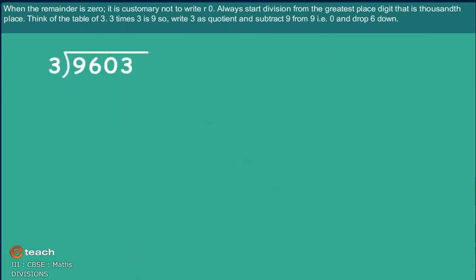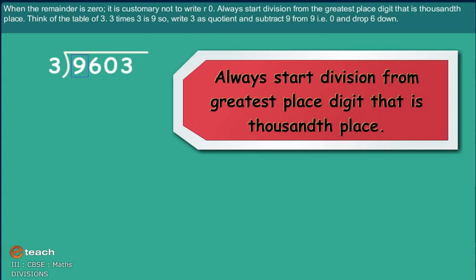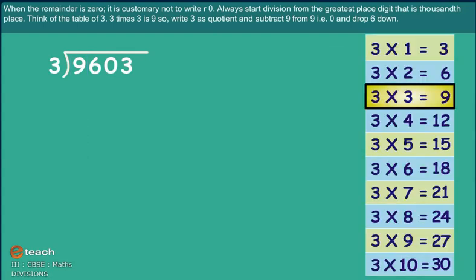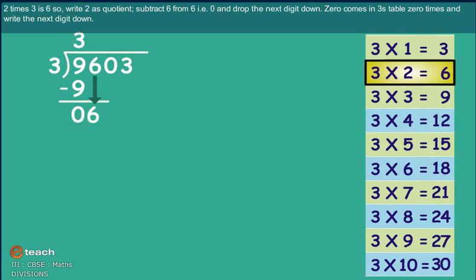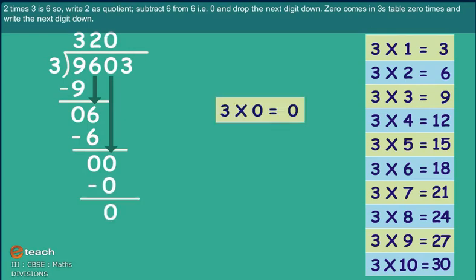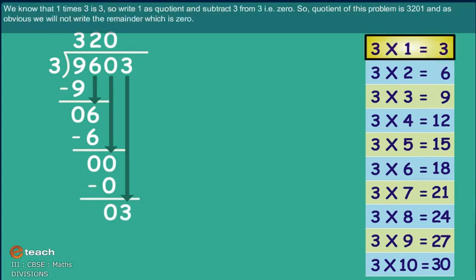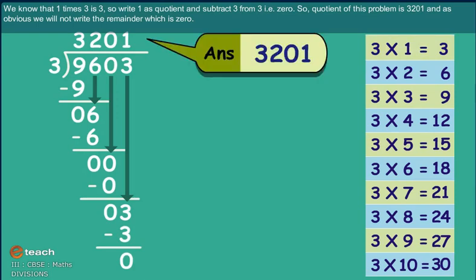Always start division from greatest place digit, that is 1000s place. Think table 3. Write 3 as quotient and subtract 9 from 9 and drop 6. 2 times 3 is 6. So write 2 as quotient, subtract 6 from 6 and next digit down. 0 comes in 3 table 0 times. We know that 1 times 3 is 3. So write 1 as quotient and subtract 3 from 3. So quotient of this problem is 3201. And obviously we will not write the remainder which is 0.